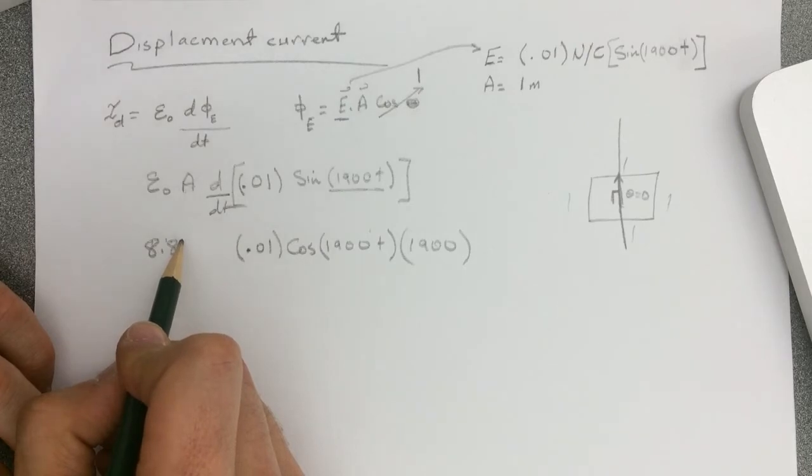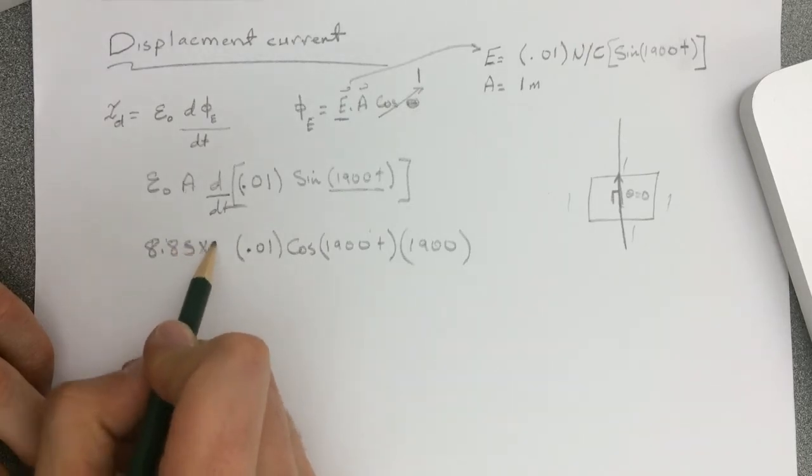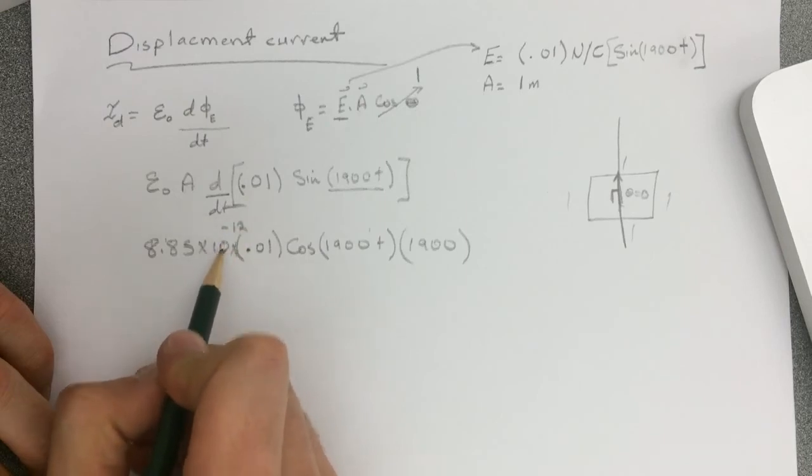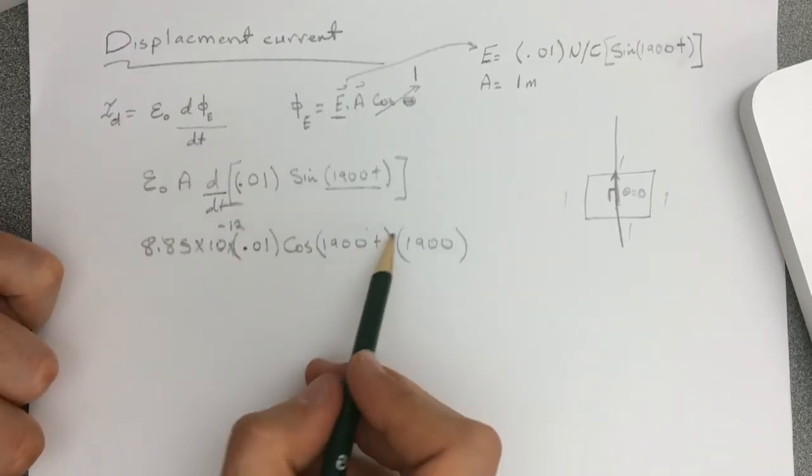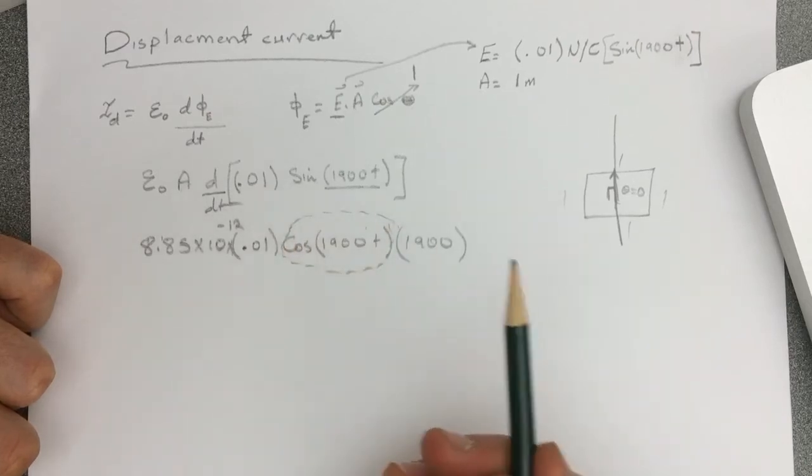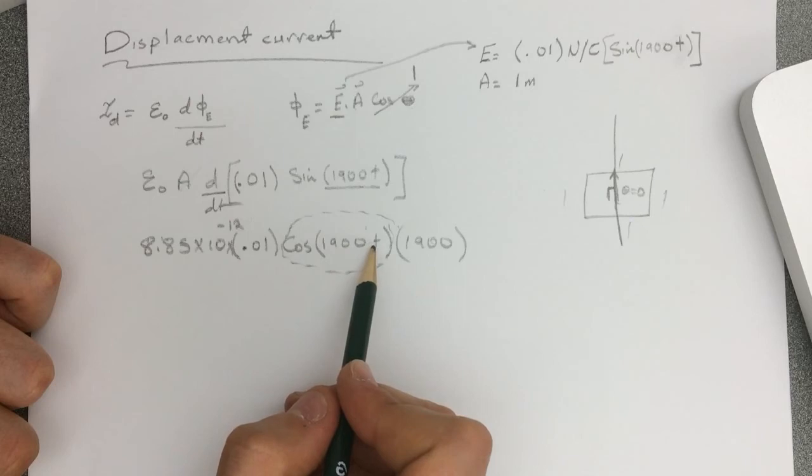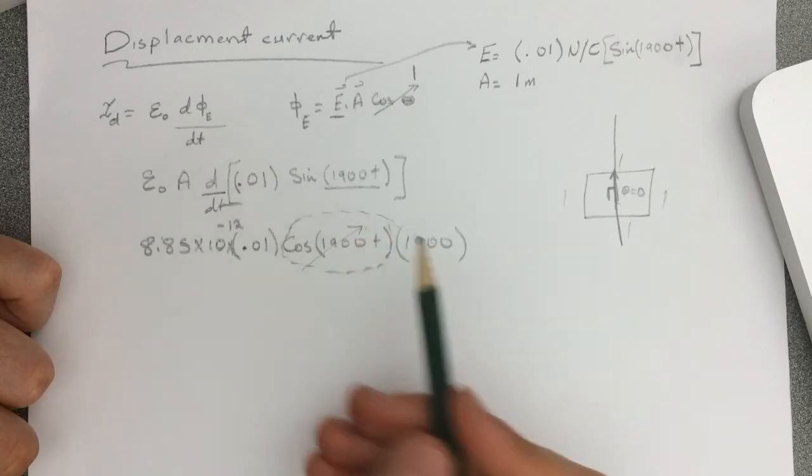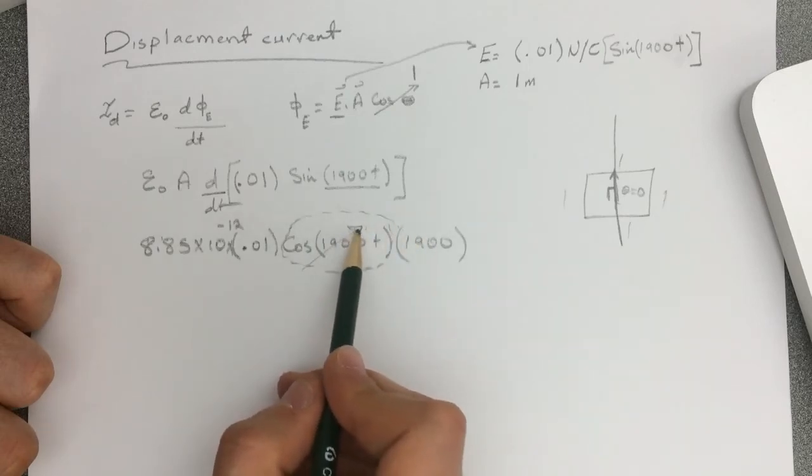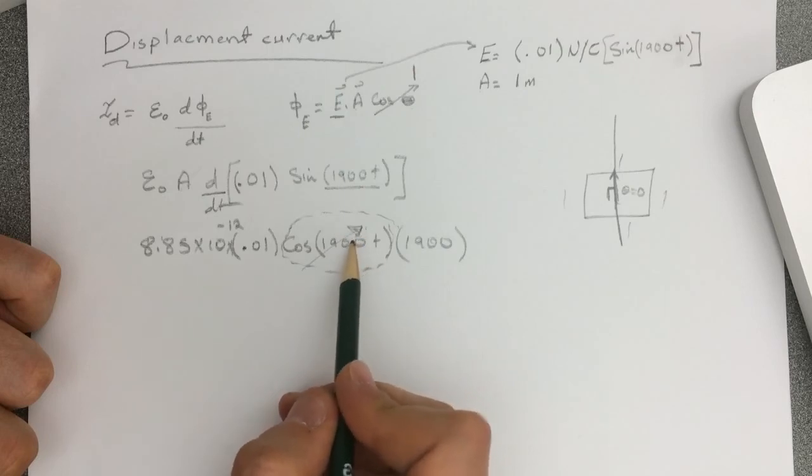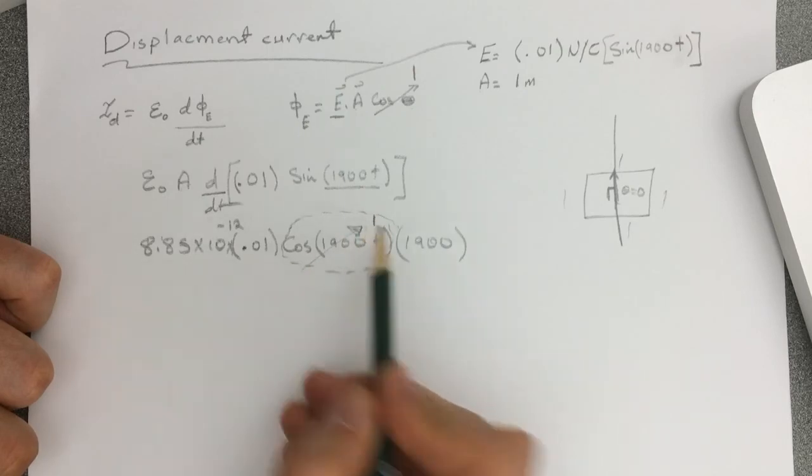Alright, so because we're looking for the maximum current and we can't get the maximum unless the cosine is 1. So we can assume at time equals 0 here. I'm not sure if that's right but it did work. So we'll take this to 1 which is the maximum value for the cosine.